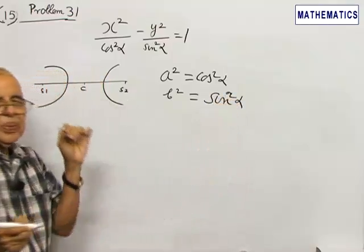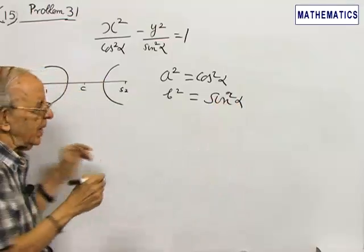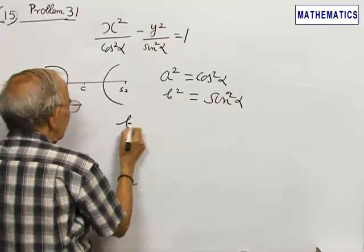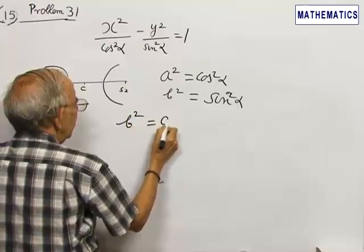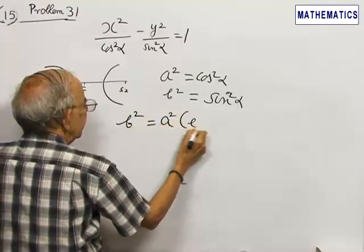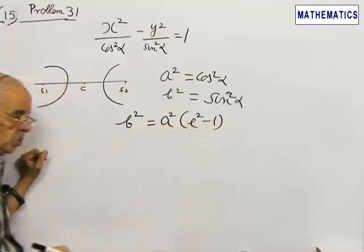The relation between a and b in the case of the hyperbola is b squared equal to a squared into e squared minus 1.